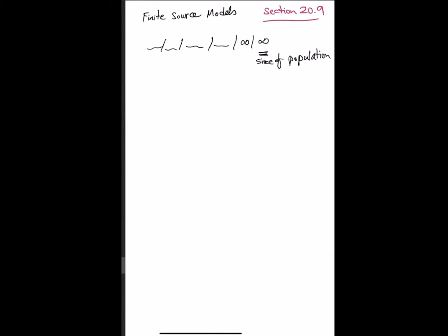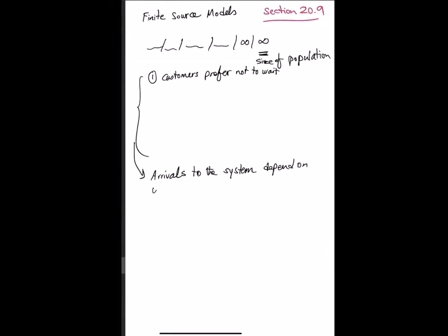One scenario is, for example, in a bank: if I go during lunchtime and there are so many people waiting already, I just go back and won't enter the bank. So that's one scenario when customers prefer not to wait — the arrival to the system depends on what is going on in the system. When customers prefer not to wait for long, they may look at the system and if there are too many people waiting, they may decide not to come, and that affects our arrival rate.